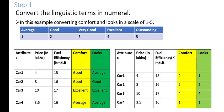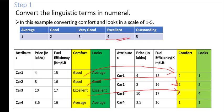Step number 1 is to convert the linguistic terms into numerals. Here we can see that comfort and looks are given in linguistic terms, so these need to be converted into numerical values. I have considered a scale of 1 to 5 where 1 is average, 2 is good, 3 is very good, 4 is excellent, and 5 is outstanding. For example, good is given 2, excellent is 4, and average is 1. Step number 1 is completed here.